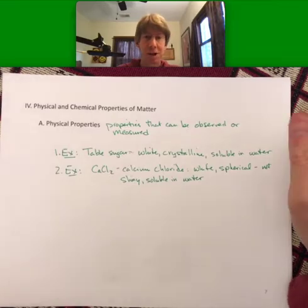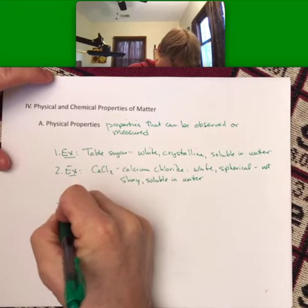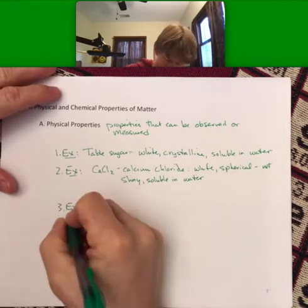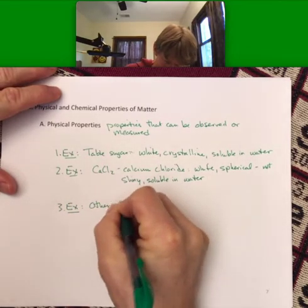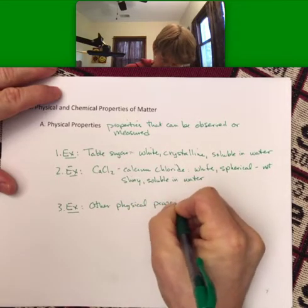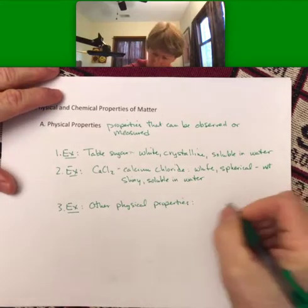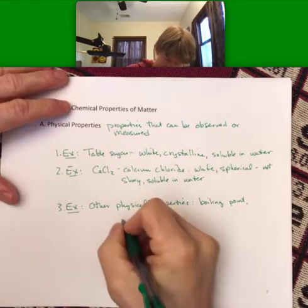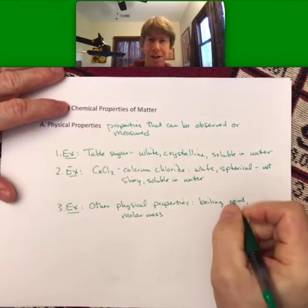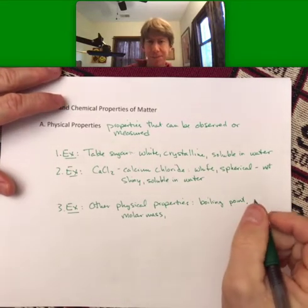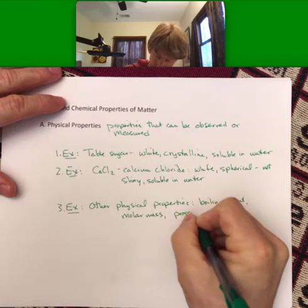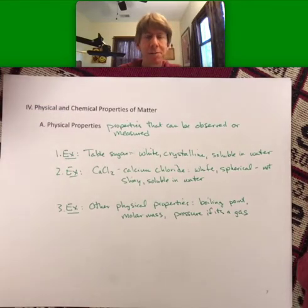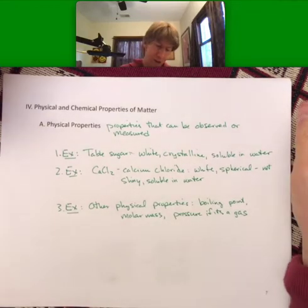When you describe it, use its physical properties such as the ones that we're doing here. You can do color, you can do shape, you can do whether it dissolves in water. Other physical properties would be, examples: boiling point, molar mass which we'll talk about coming up, pressure if it's a gas. Anything you can measure or observe, that's what we're looking for, and those are physical properties.